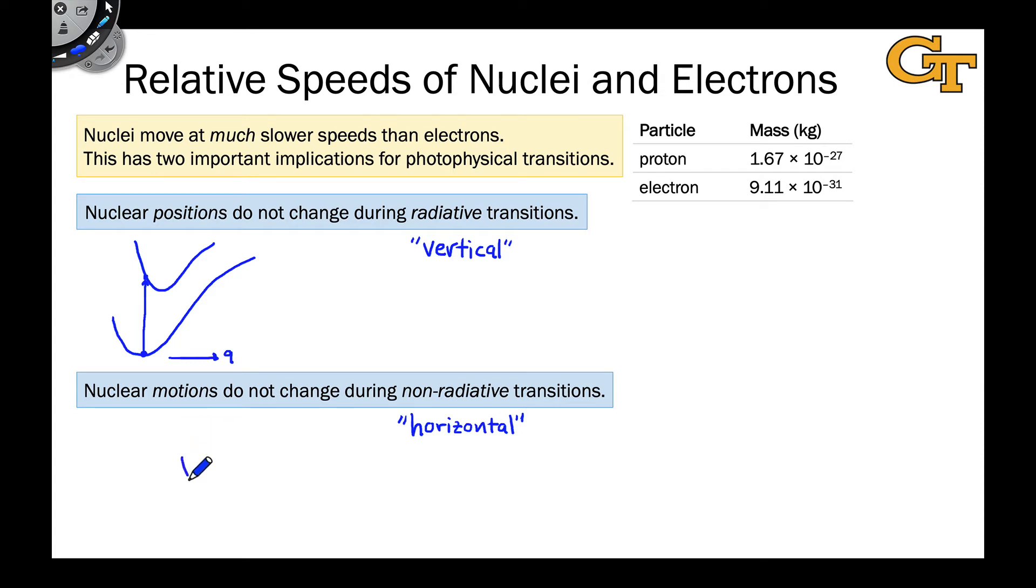So for example, say we were thinking again about two electronic states, one slightly higher than another, and we have our initial point, our initial representative point right here in some vibrational level of the ground state. The non-radiative transition will take place as that representative point moves in this vibrational level and at some point, just due to a quantum probability, becomes governed by the excited state vibrational level at the same energy.